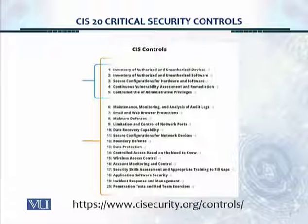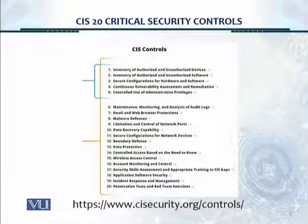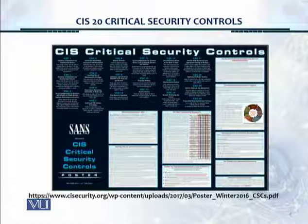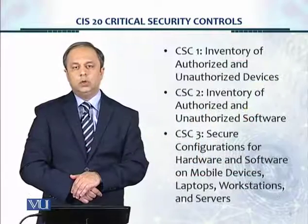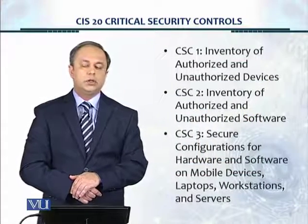This graphic splits up the 20 critical security controls into two parts. There's a top five, and then there are the remaining 15 controls. The top five are what an organization should do first, as they provide more return on effort. All 20 need to be done. There's also a nice poster available at the URL shown, which can be printed on a large printer and displayed in your security operations center or where the IT security team sits.